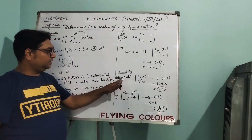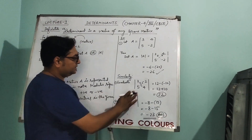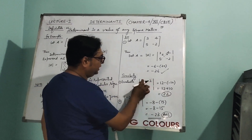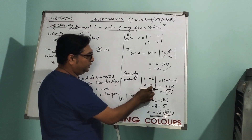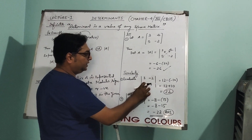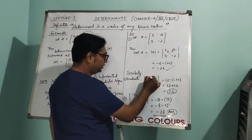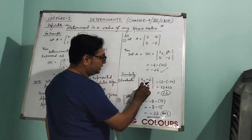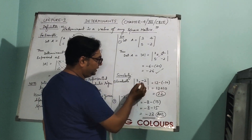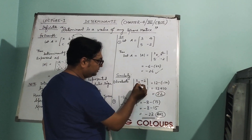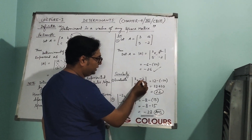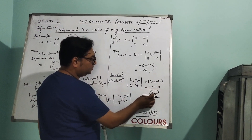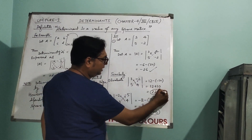Let's take another example. We have a determinant with entries 3, minus 2, 5, 4. To get the value, take the product of the principal diagonal: 4 times 3 = 12. Then use the minus sign by the property and take the product of the conjugate diagonal, which is minus 10 — that becomes plus 10. So the value will be 22.